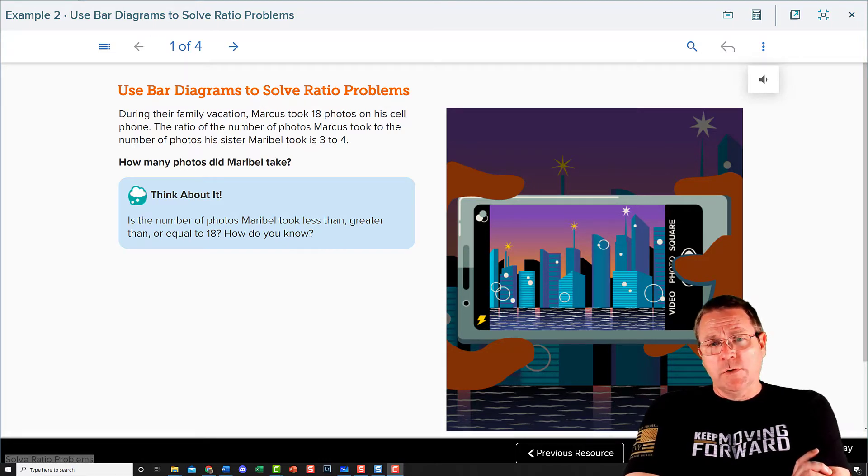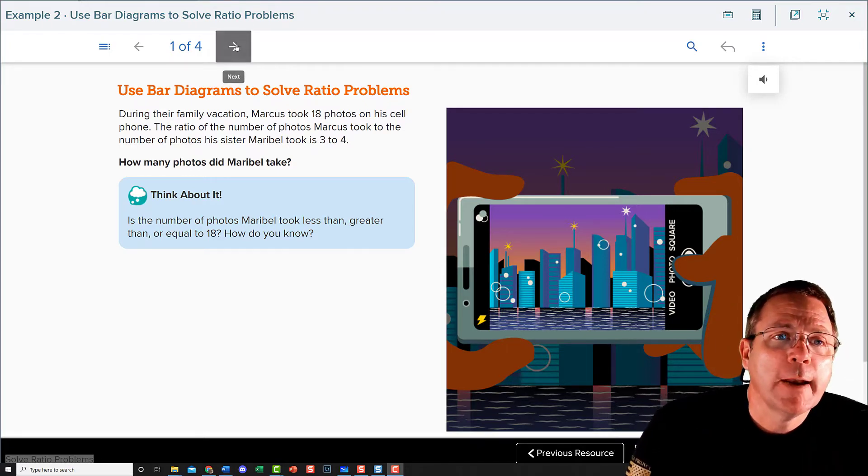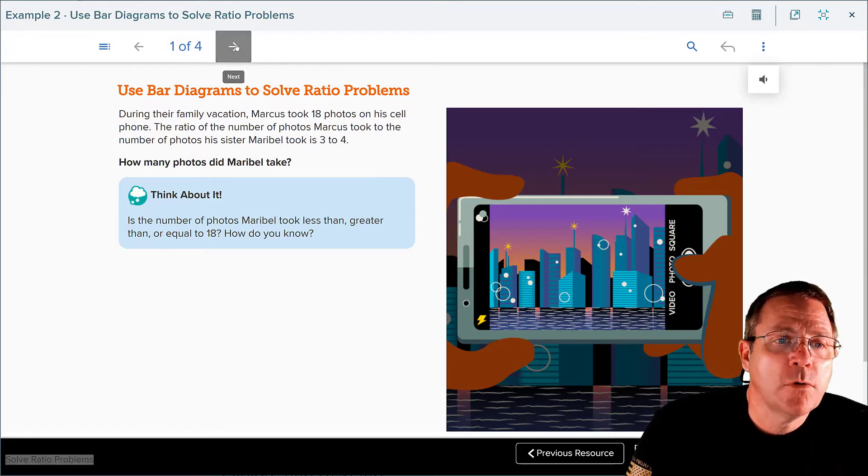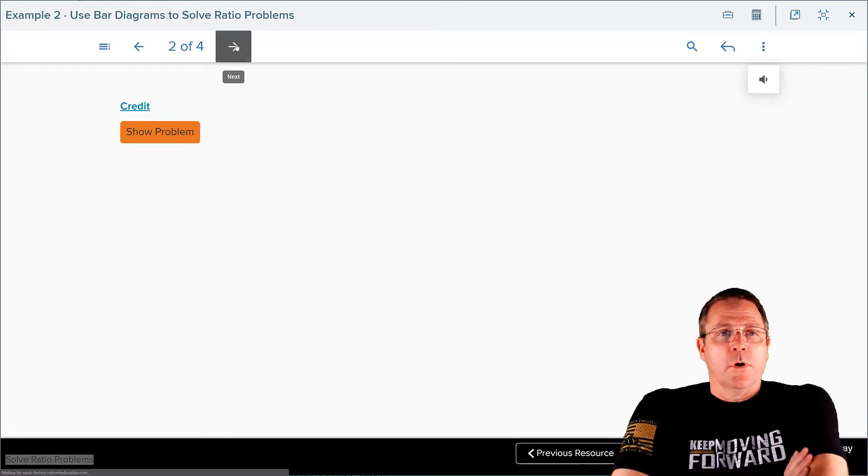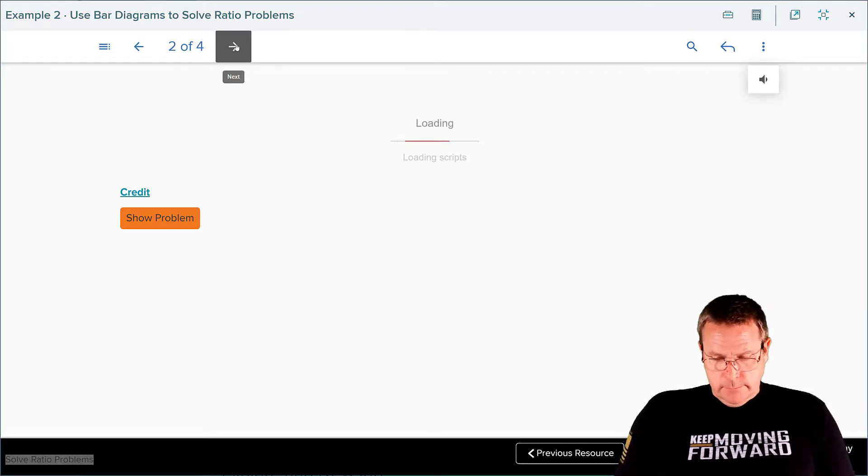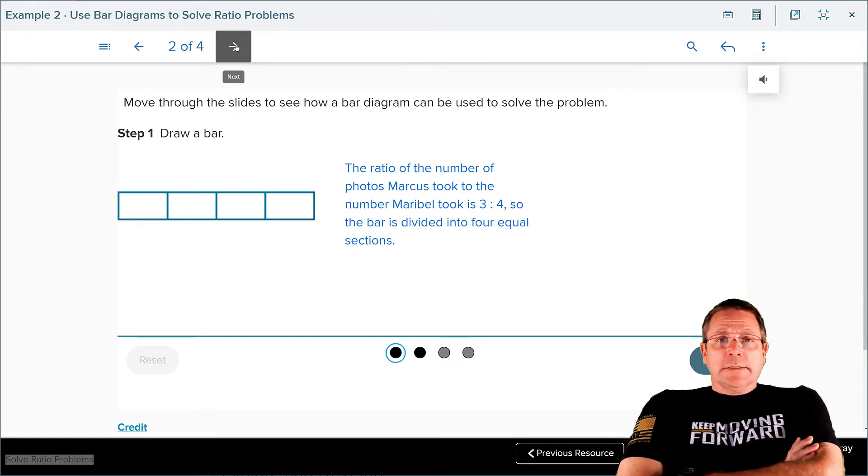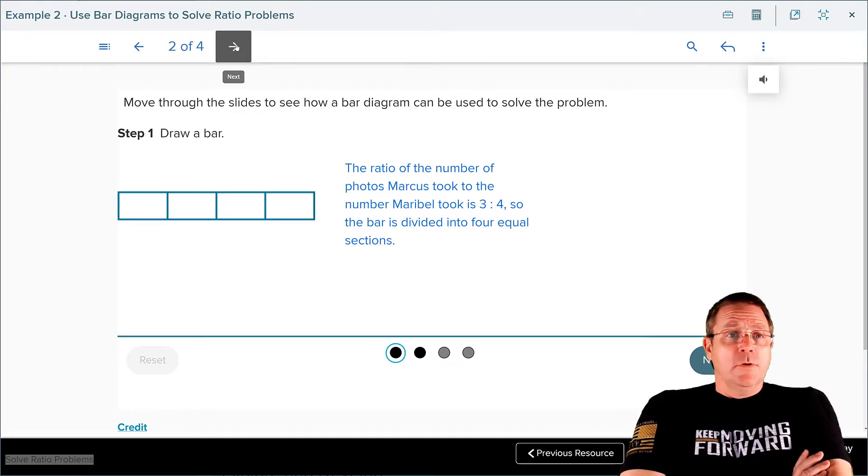So what's your answer? Well Marcus took 18. It was a three to four ratio between Marcus and Maribel. That means Maribel had to have taken more than 18. So your final answer should end up being more than 18. With that in our little database to hold on to we're going to start working on the problem. We're going to move through the slides to see how a bar diagram can be used to solve the problem.